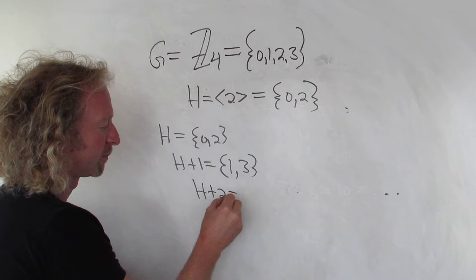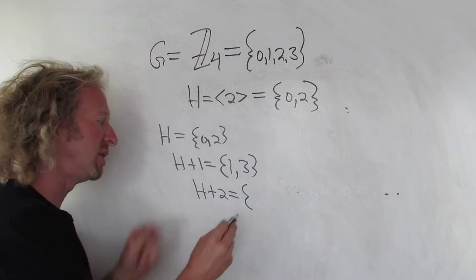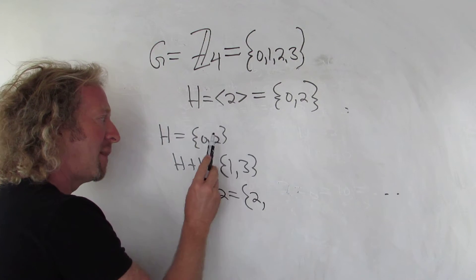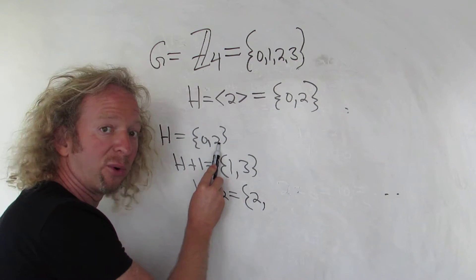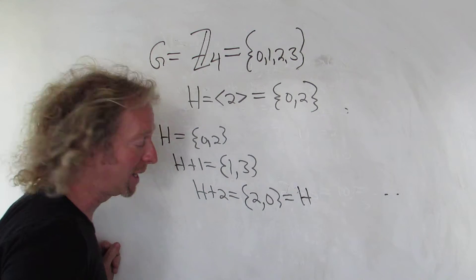H plus 2, so 0 plus 2 is 2. And then 2 plus 2 is 4, but that's 0, so we get back to H. We get back to H.